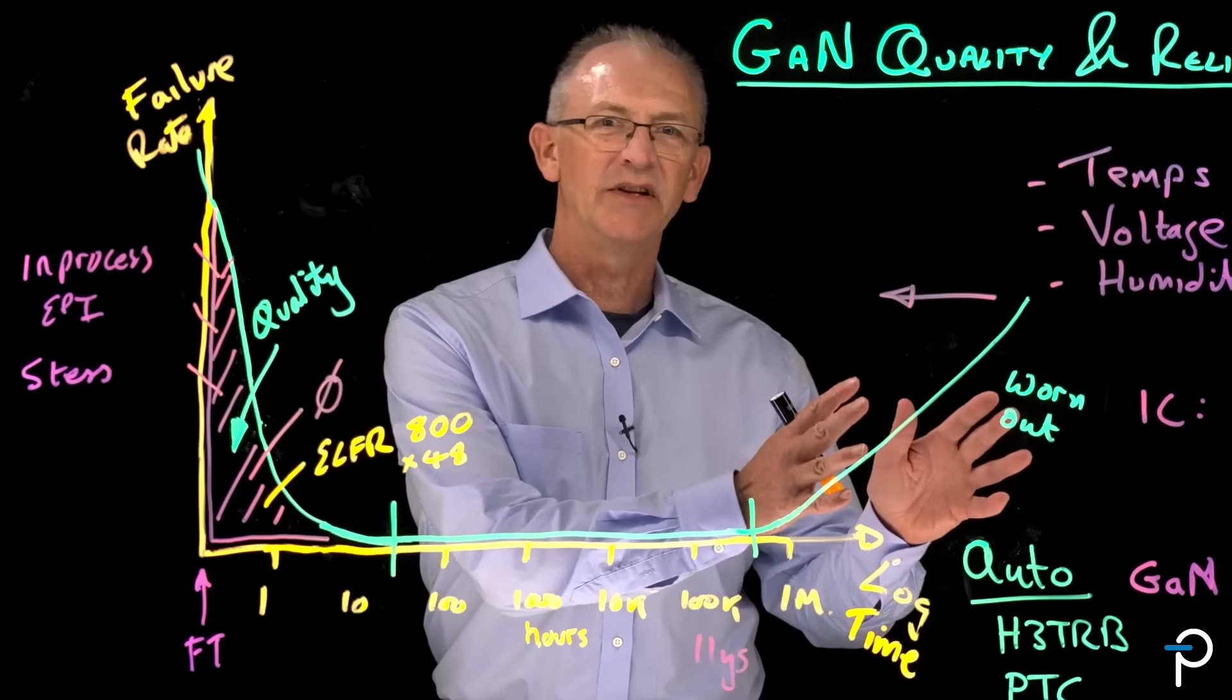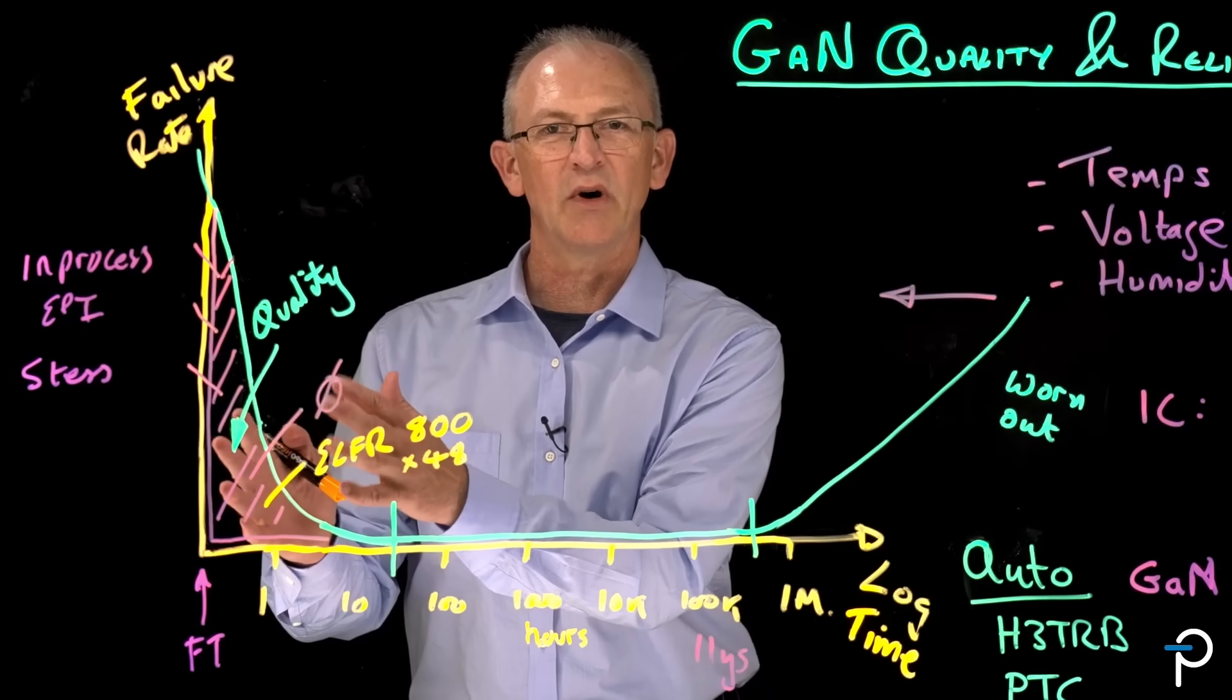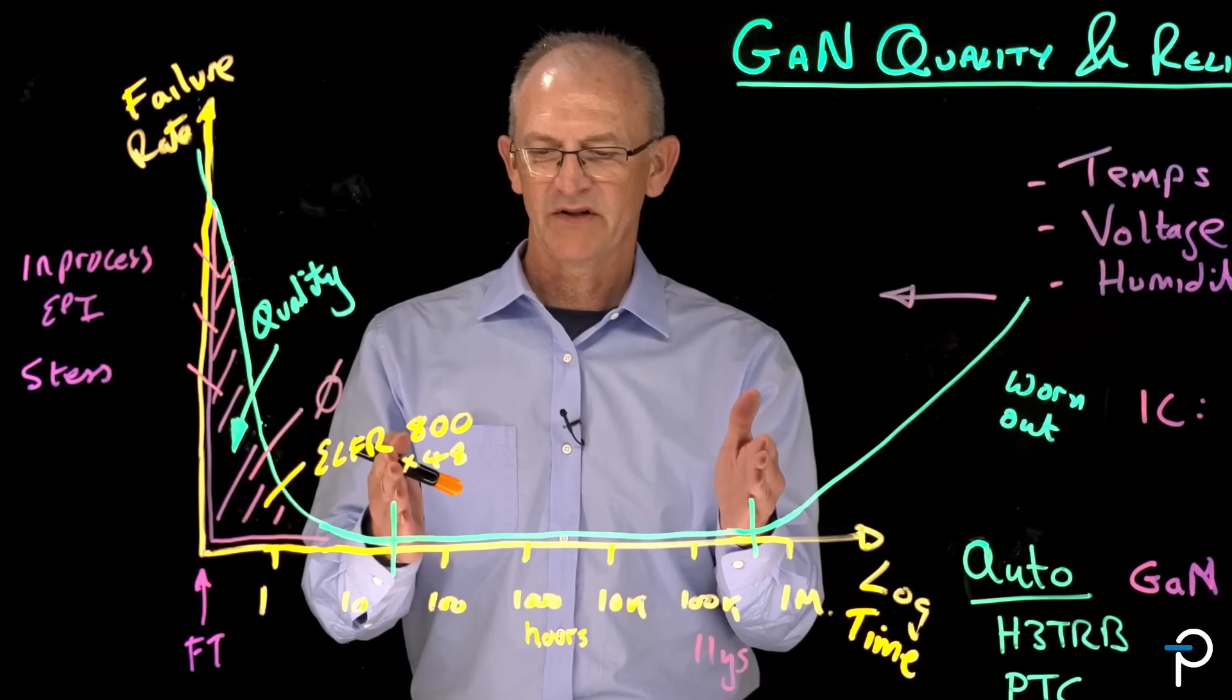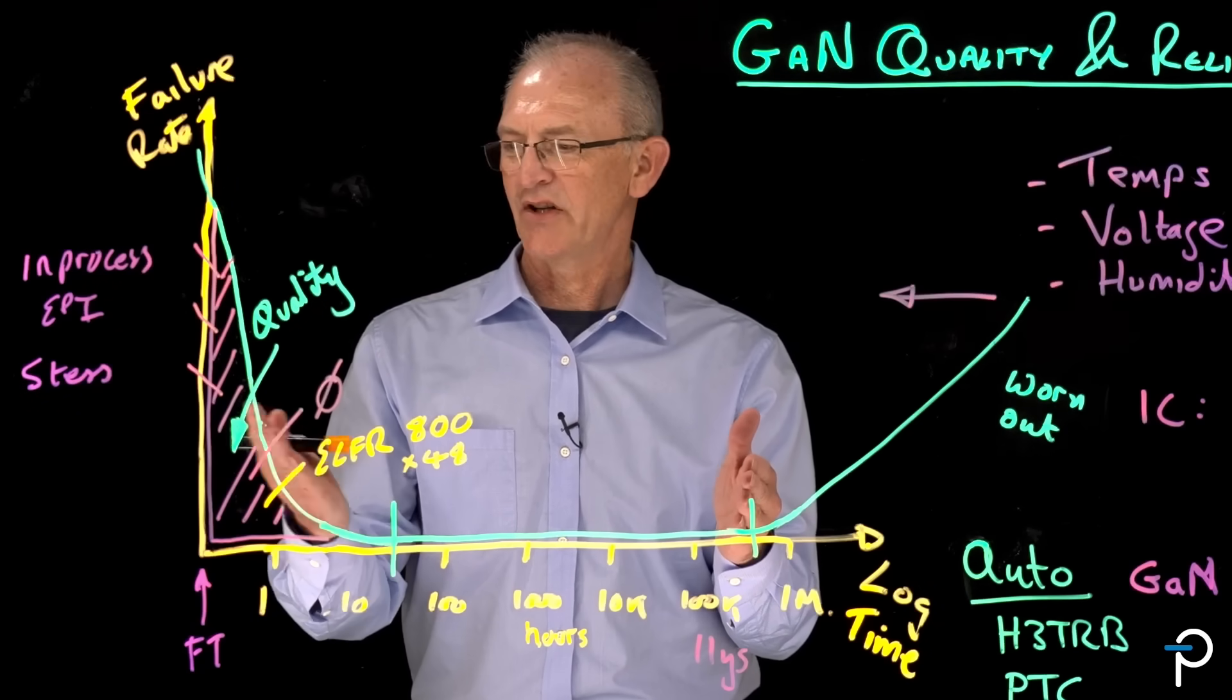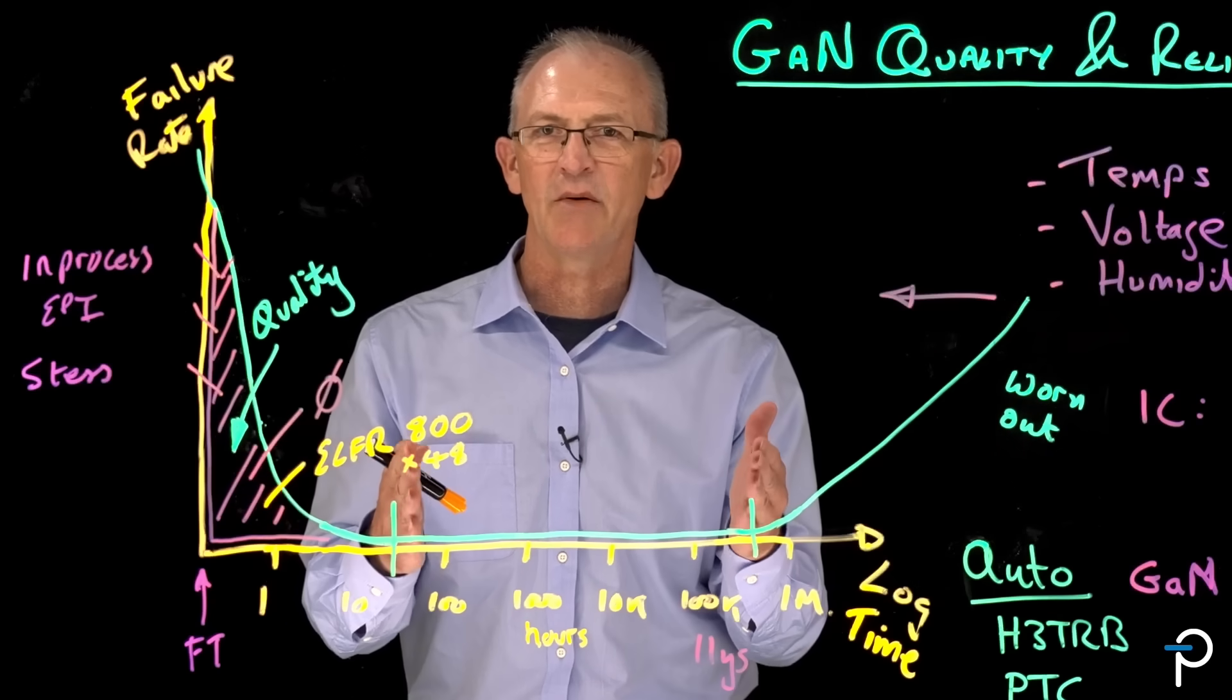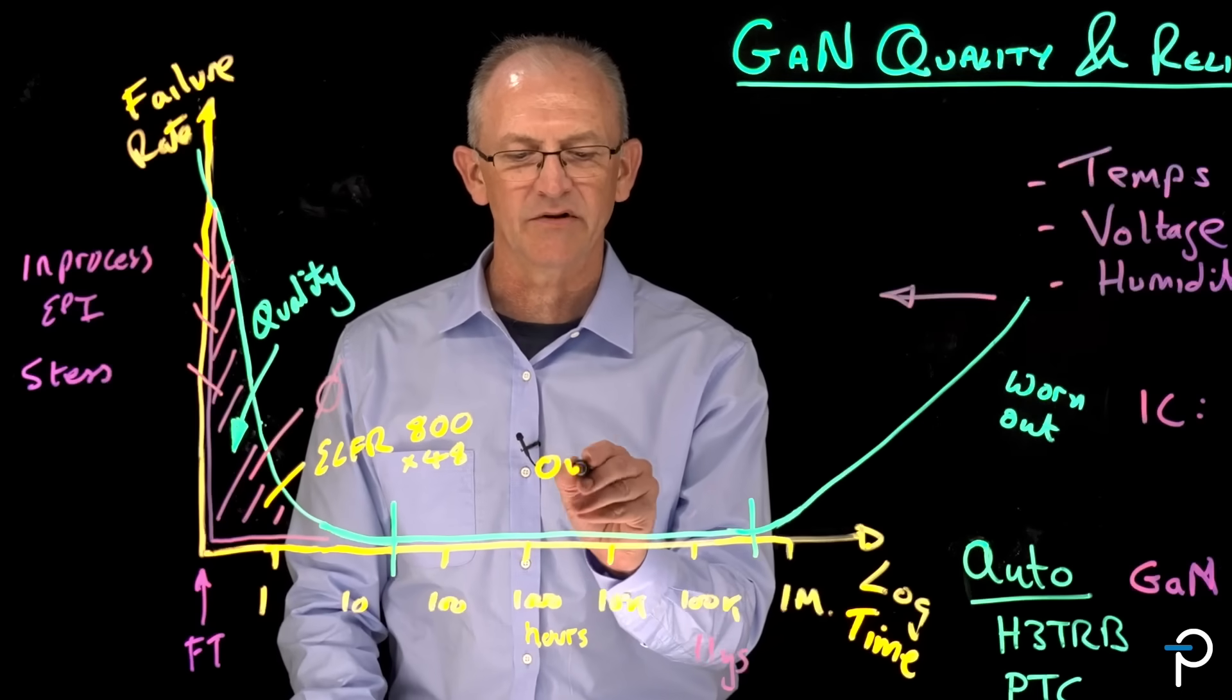So we've spoken about reliability and wear out mechanisms and how we guarantee initial quality. But we've got a middle section here. These are parts that are perfectly good. They've been manufactured perfectly. They haven't worn out yet, but maybe they're dead anyway. What happened? Well, the answer is overstress.